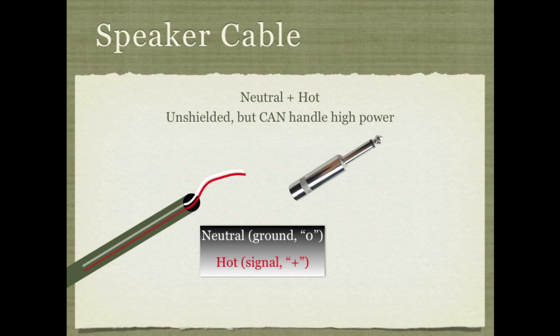A high voltage cable meant for speakers has just two separate lines that are not wrapped around each other as a shield — just a neutral and a hot. If you try to use a high voltage speaker cable for an instrument or other low voltage purpose, you'll collect much more interference and noise. If you're using active speakers, you don't need speaker cables — you can use low voltage cables because you're sending the speaker a line level signal and it amplifies it internally to speaker level.